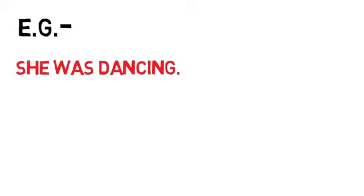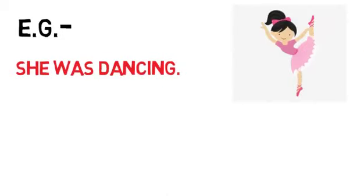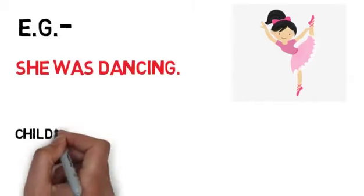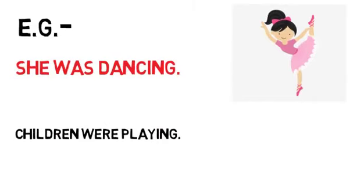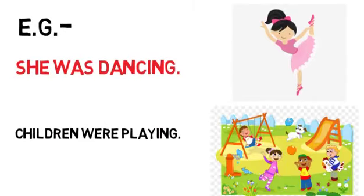Let's understand by some examples. She was dancing. This has already happened, it is a past event. Children were playing.